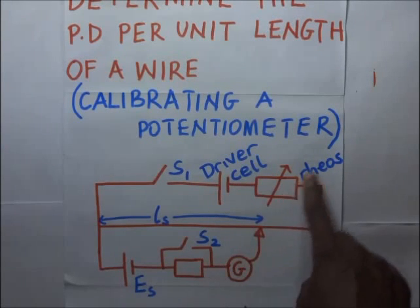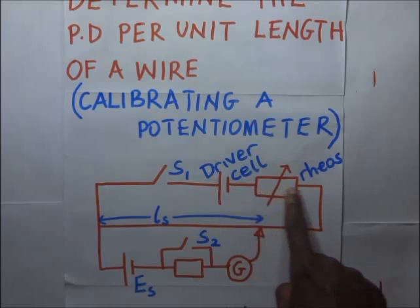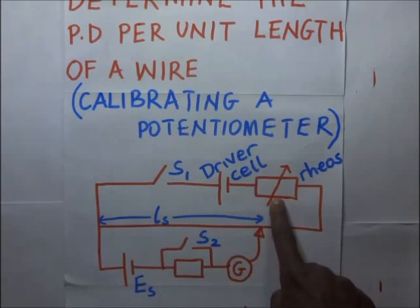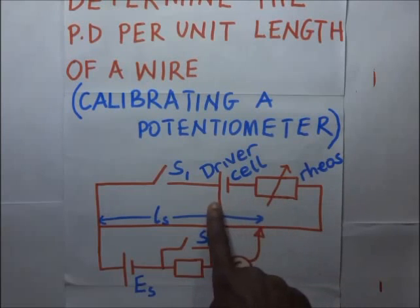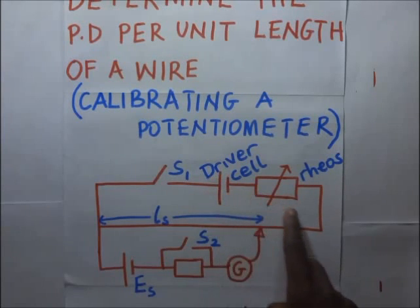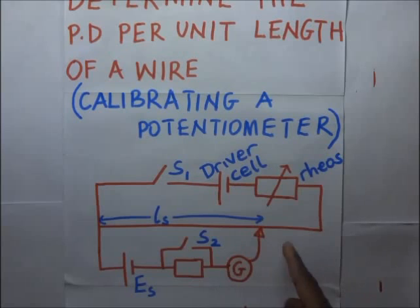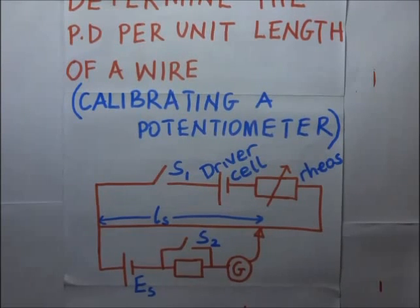In this circuit we are having a rheostat and with this rheostat we shall be adjusting its resistance. The objective behind this is to regulate the amount of current in the driver in the primary circuit. Then in our secondary circuit we have the galvanometer as usual and we are also having a resistor right there.